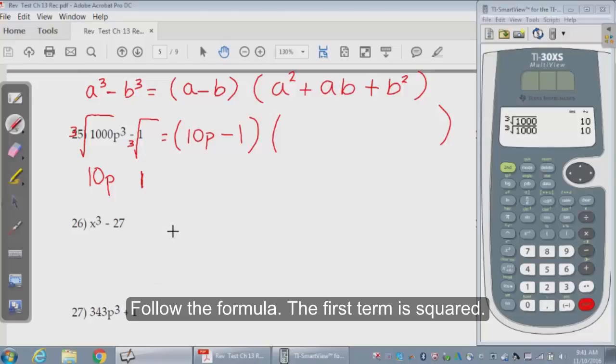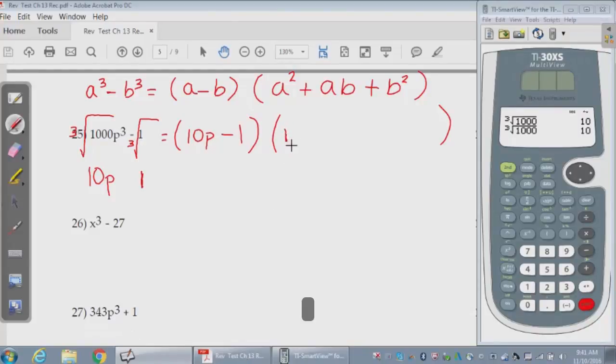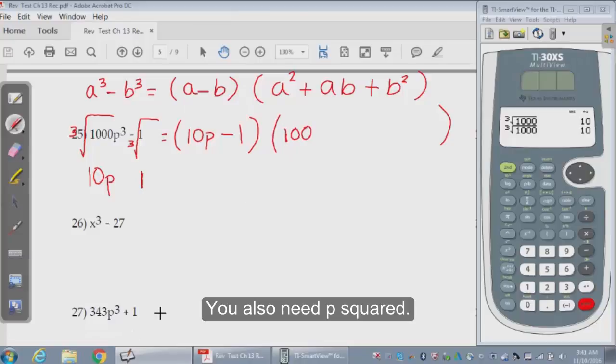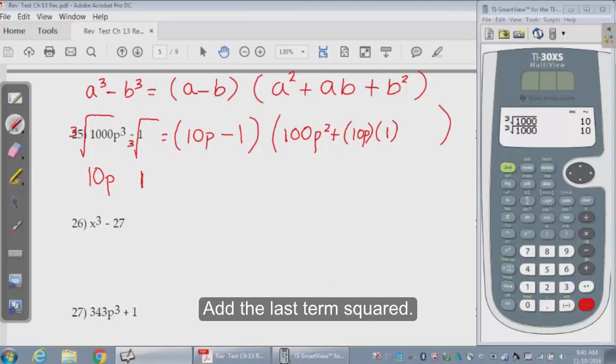The first, square. Square both. 10 squared is 100. P squared. Now multiply both. And the last square.